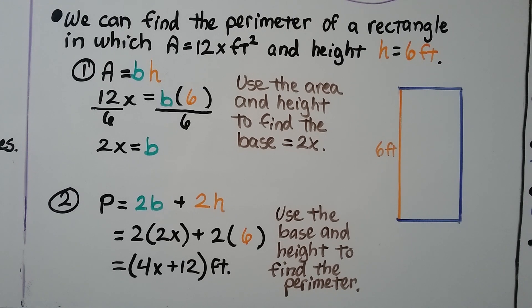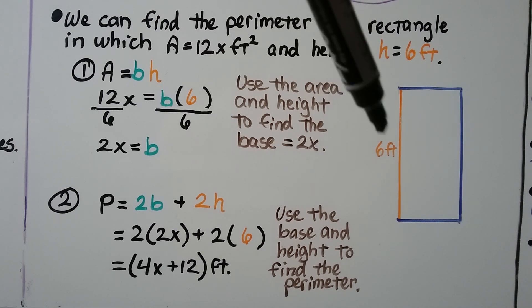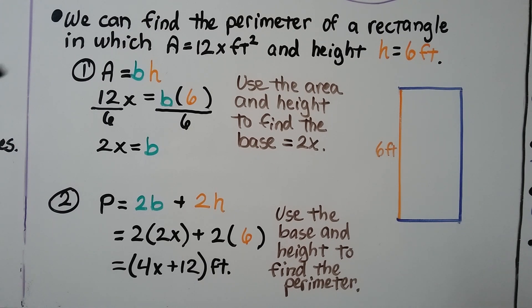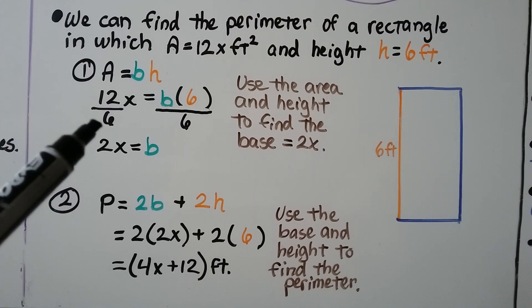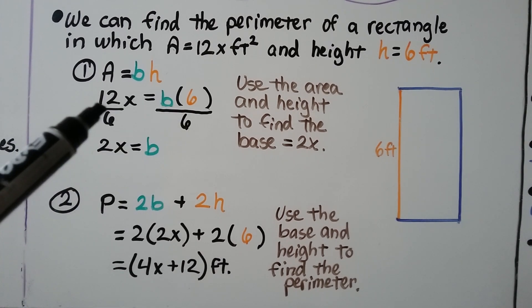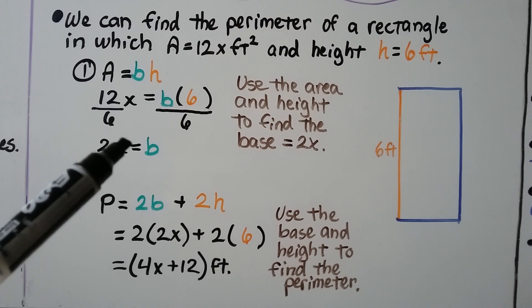We can find the perimeter of a rectangle in which the area a is equal to 12x feet squared and has a height of 6 feet. So h equals 6. And using the area and height to find the base, we get 12x equals our base times that height 6. We can divide both sides of the equation by 6 and get that 2x equals b.